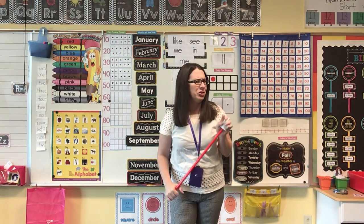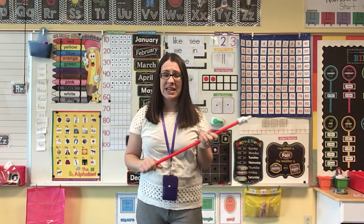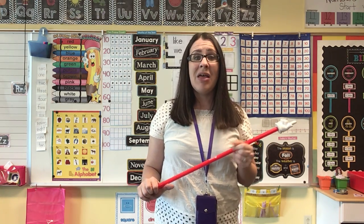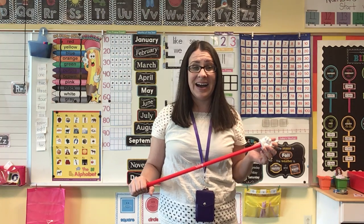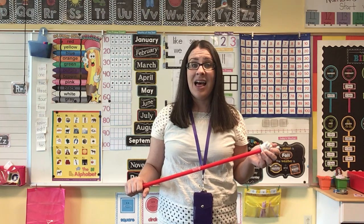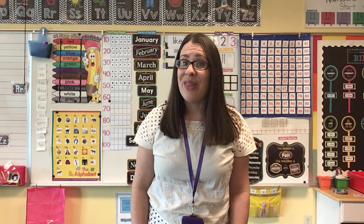Let's keep on going with calendar — just a couple more things. The next thing I want to do is practice our numbers. We're not going to use the chart today; we're just going to count together. Are you ready? Count with me: one, two, three, four, five, six, seven, eight, nine, ten, eleven, twelve, thirteen, fourteen, fifteen, sixteen, seventeen, eighteen, nineteen, twenty, twenty-one, twenty-two, twenty-three, twenty-four, twenty-five, twenty-six, twenty-seven, twenty-eight, twenty-nine, thirty. Awesome job.